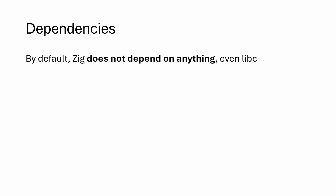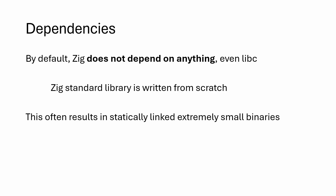Let's also talk about Zig dependencies. By default, Zig does not depend on anything, not even libc — and you can find the libc dependency in pretty much any programming language including C, C++, or Rust. That's because the Zig standard library is written entirely from scratch, and this often results in statically linked, extremely small binaries.